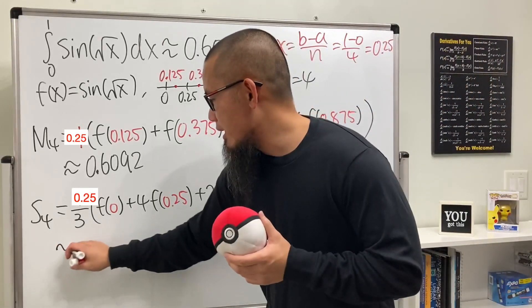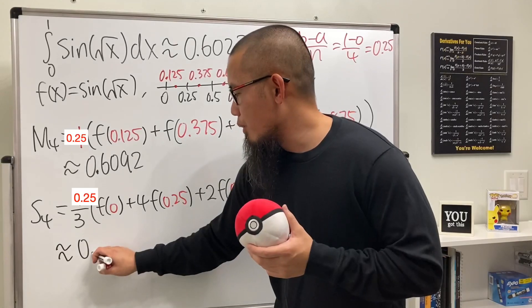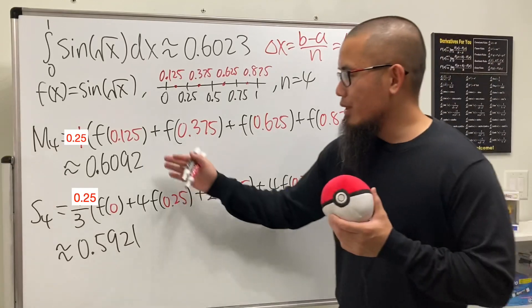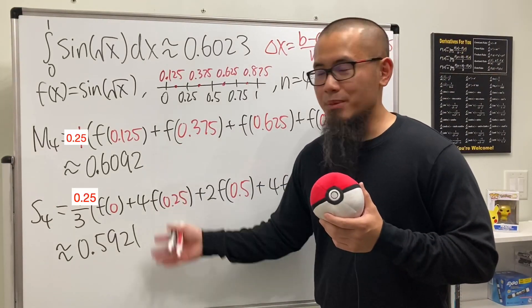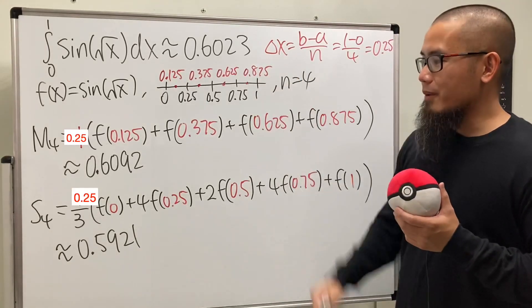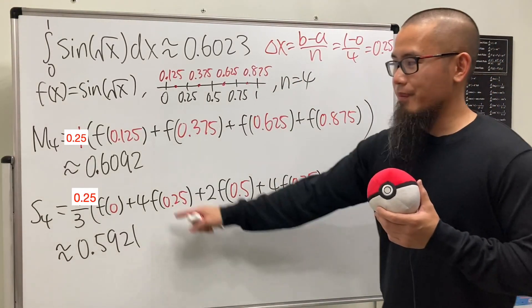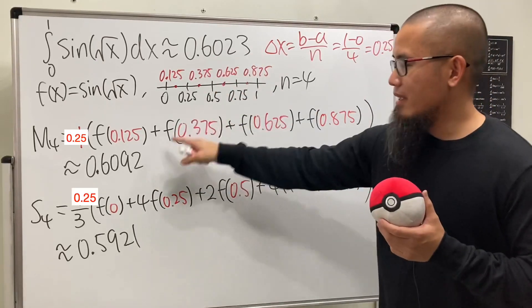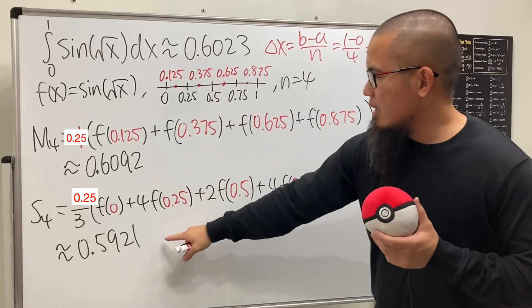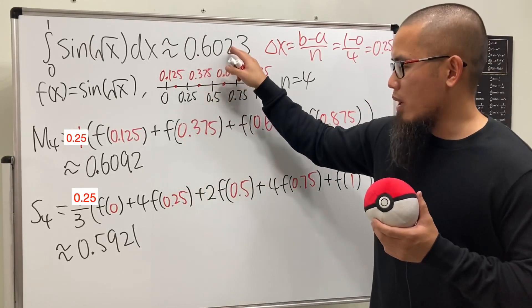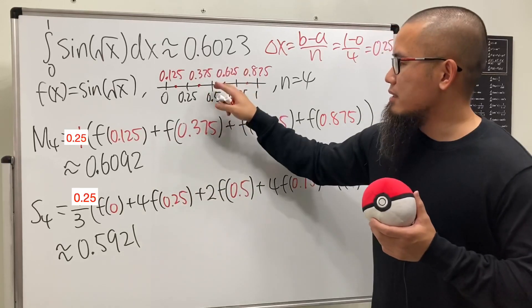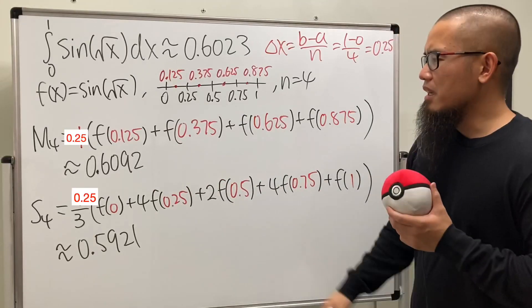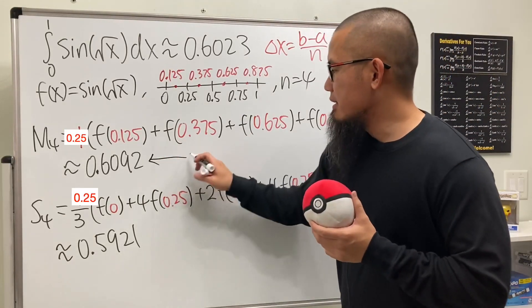Using the calculator, we get approximately 0.5921. Now have a look. Which approximation is closer to the answer we have, 0.6023? This one, the midpoint rule. If you do it carefully, it's actually this one. This is off by almost 0.01, but the midpoint and the true value are very close, like 0.007 apart. So in fact, the midpoint rule is actually better.